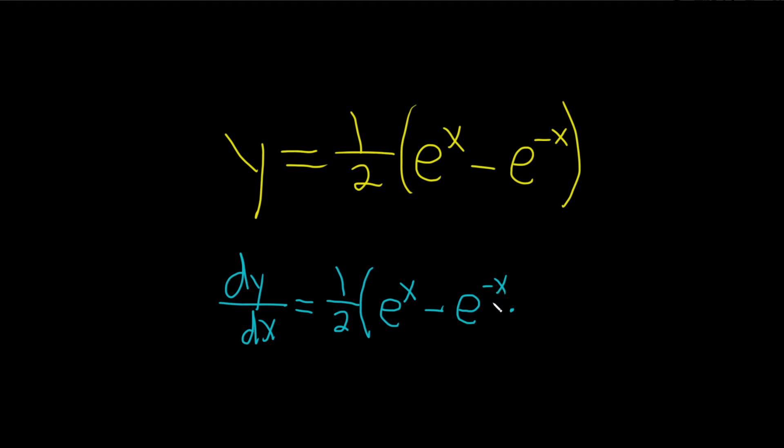So the inside function is negative x and its derivative is negative one. That's the chain rule. When you take this derivative, you take the derivative of the outside—the outside function is e to the x and its derivative is e to the x—and then you leave it evaluated at the inside. You leave the inside untouched, and then you multiply by the derivative of the inside. That's the chain rule.